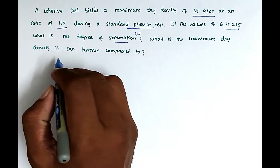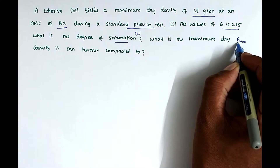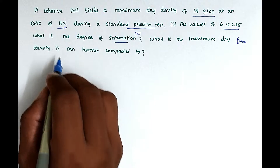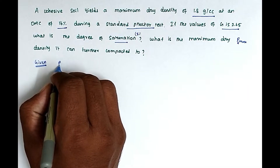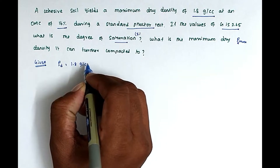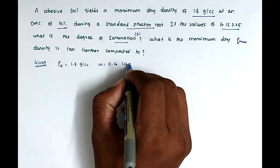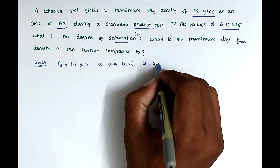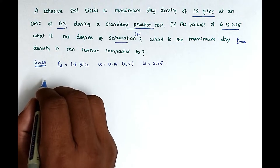And what is the maximum dry density it can be further compacted to, that is ρ_max? So we have to find out the degree of saturation and maximum dry density. The given values are: ρD = 1.8 gram per centimeter cube, water content W = 0.16 (that is 16 percentage), and specific gravity G = 2.65.